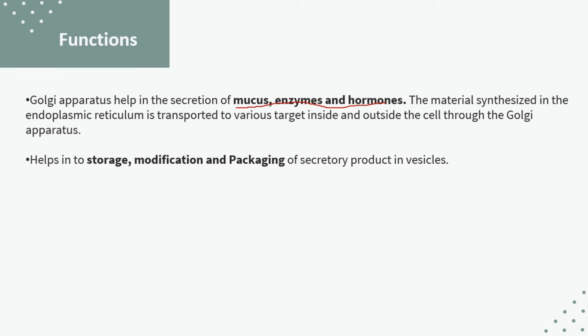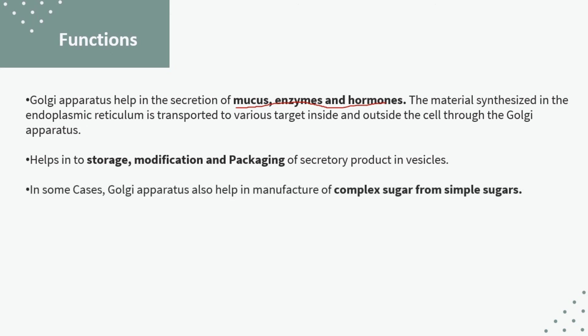Next, the Golgi apparatus helps in the storage, modification, and packaging of secretory products in vesicles. The secretory products, which include lipids and proteins, undergo storage, modification, and packaging within the Golgi apparatus.